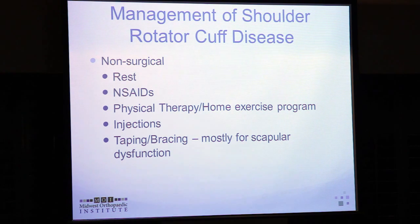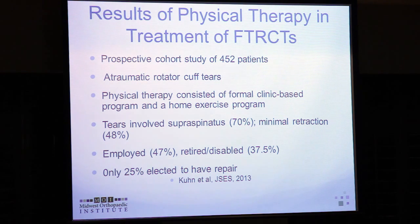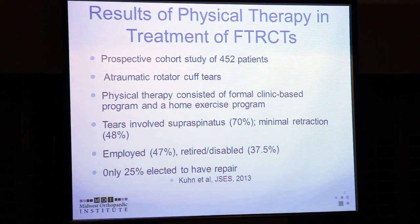When someone comes in with a painful shoulder that came on gradually without significant weakness, we might try non-surgical options: rest, NSAIDs, physical therapy, injections, and for scapular balance issues, taping or bracing. A prospective cohort study of atraumatic rotator cuff tears in a largely sedentary population found that with rehabilitation alone, only 25% of people went on to want surgery — suggesting physical therapy alone is helpful.